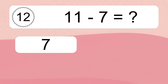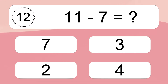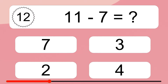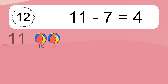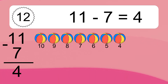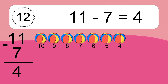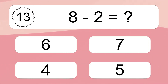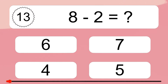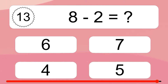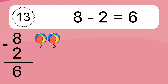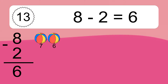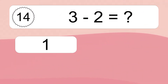11 minus 7 equals what? 11 minus 7 equals 4. Let's count it. 10, 9, 8, 7, 6, 5, 4. 8 minus 2 equals what? 8 minus 2 equals 6. Let's count it. 7, 6.